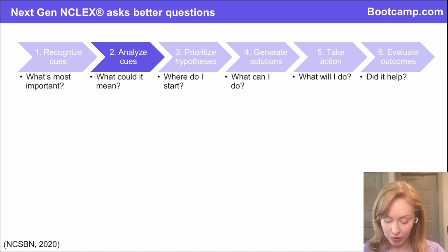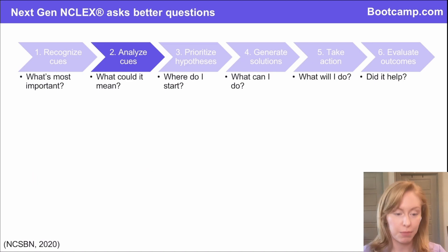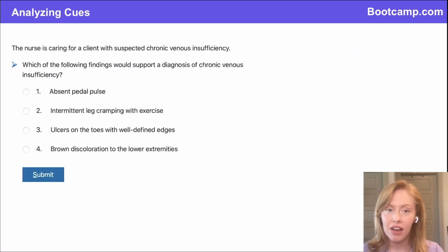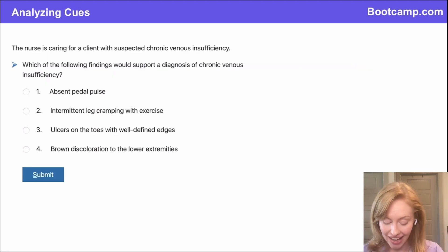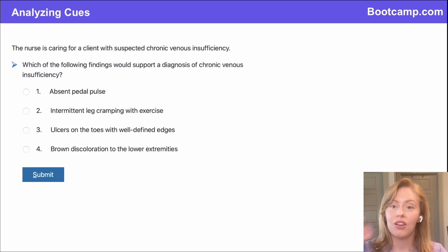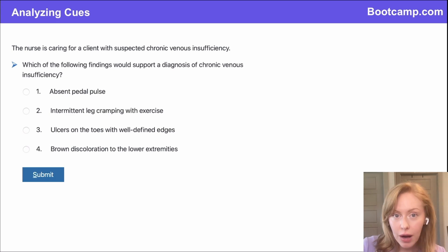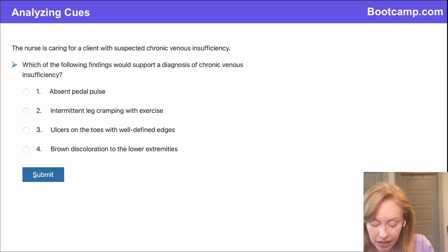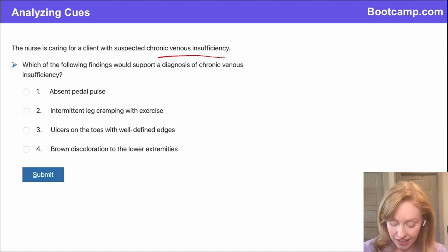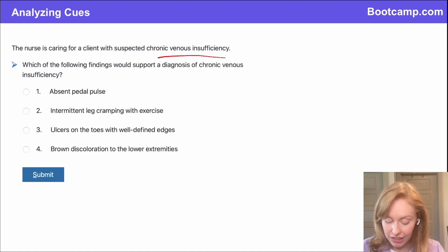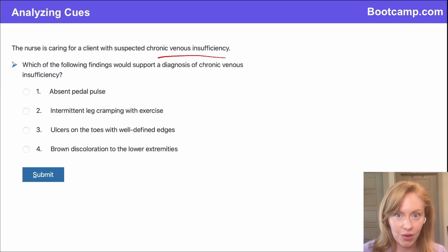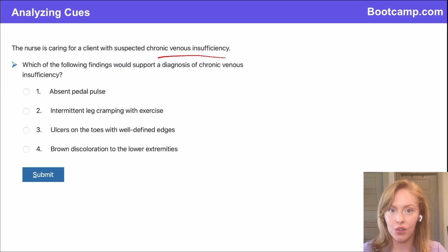So after we recognize cues, we are asked to analyze those cues and figure out what they could mean. A really common way that the NCLEX loves to do this is to ask you to distinguish between chronic venous problems and arterial problems. In this case, we've got a client with chronic venous insufficiency — which of these findings is going to support that diagnosis? They love to make sure you know arterial versus venous.